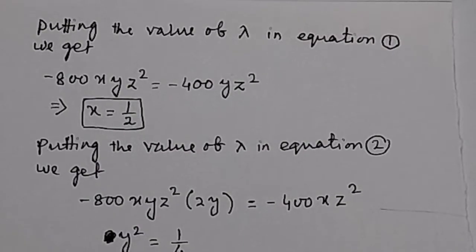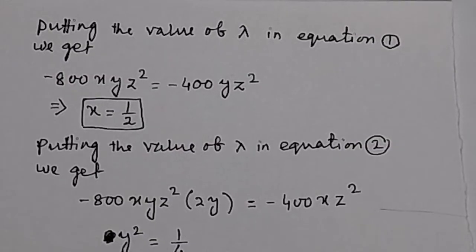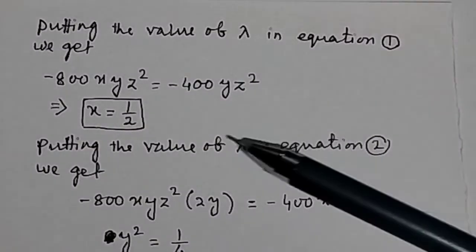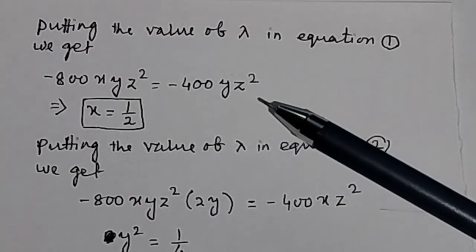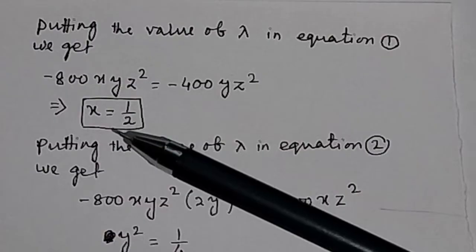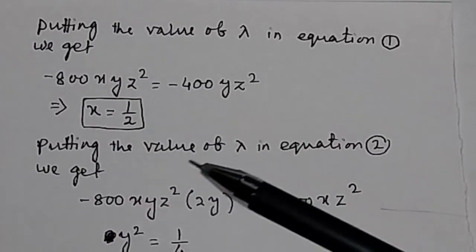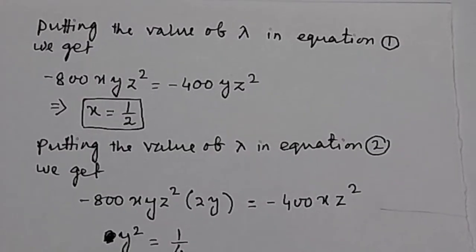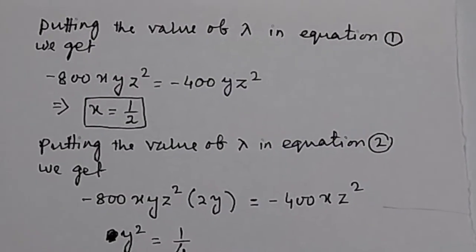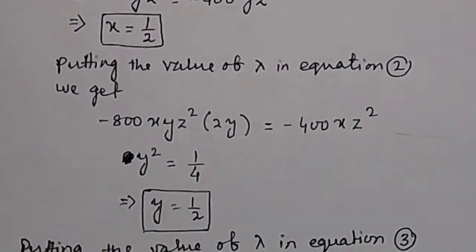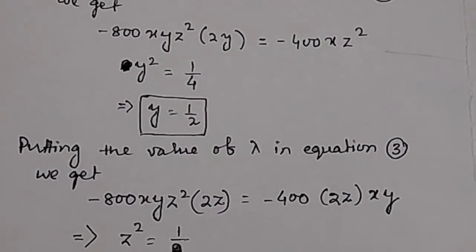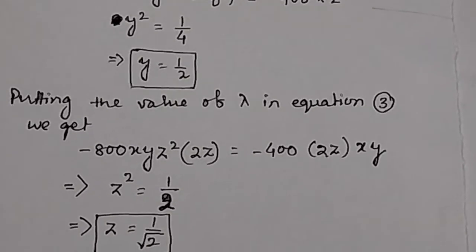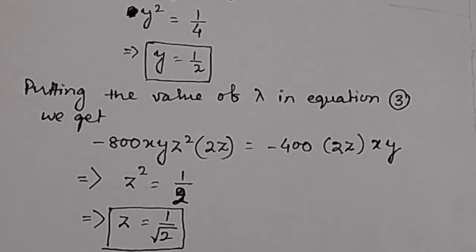Substituting the value of λ back into Equation 1: −800xyz²·2x = −400yz², which gives x = 1/2. Substituting into Equation 2 gives y = 1/2. Similarly, substituting into Equation 3 gives z = 1/√2.